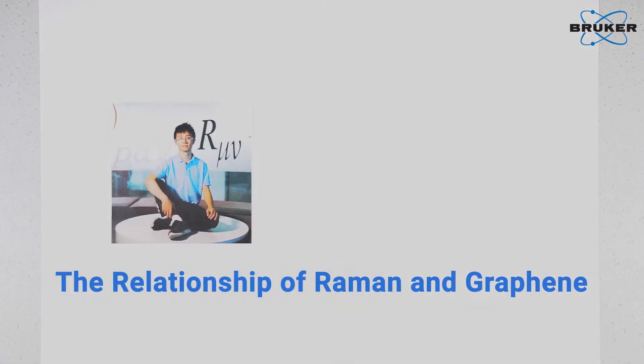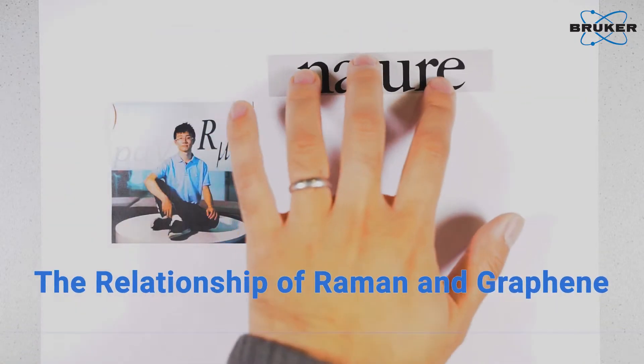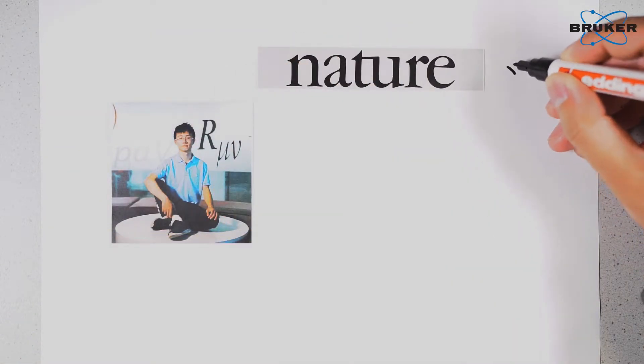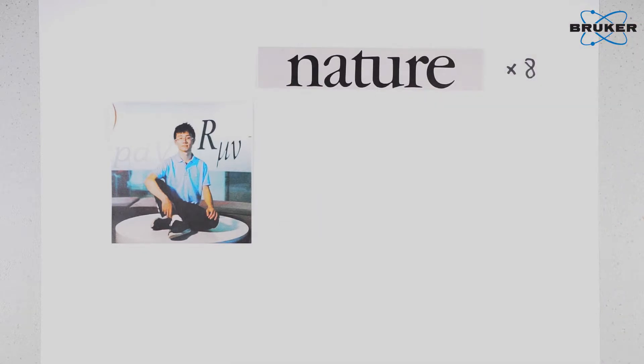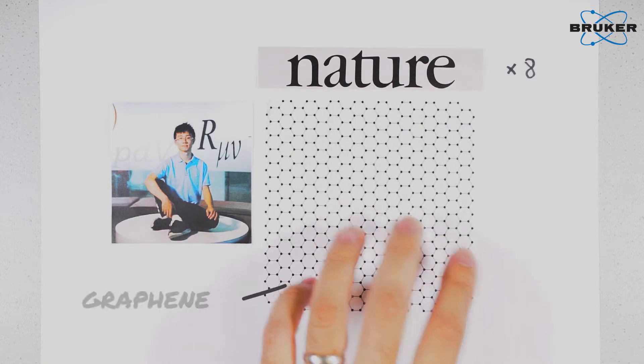In July 2021, 25-year-old scientist Dr. Cao from MIT published his eighth paper in Nature, reporting findings of magic-angle graphene, a new type of superconductive material.